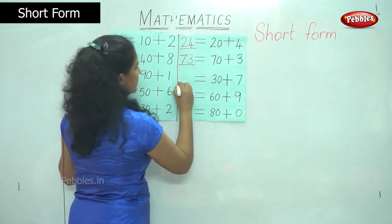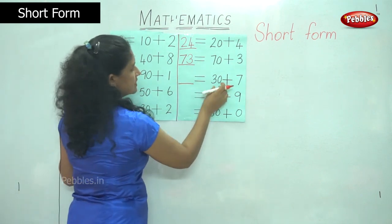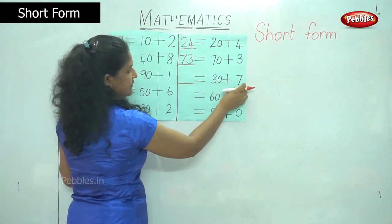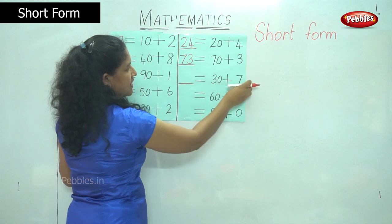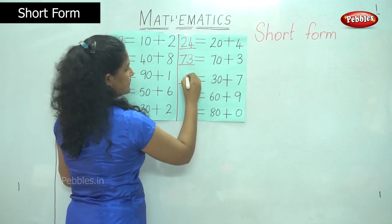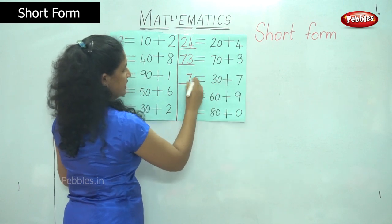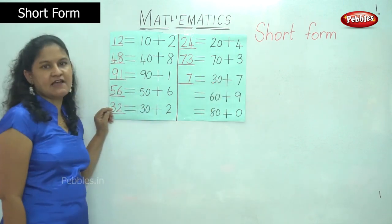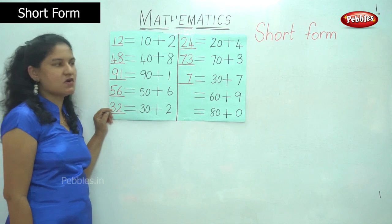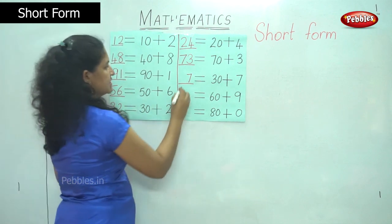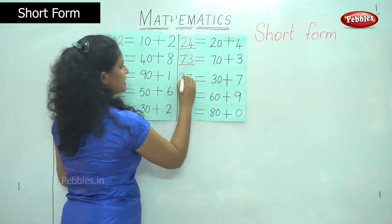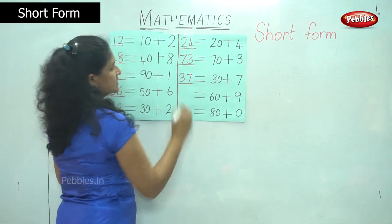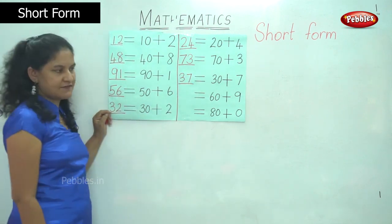The next number I have is 30 plus 7. So in the ones place I have number 7, and in the tens place I have 3 tens or 30, that gives me the number 37.